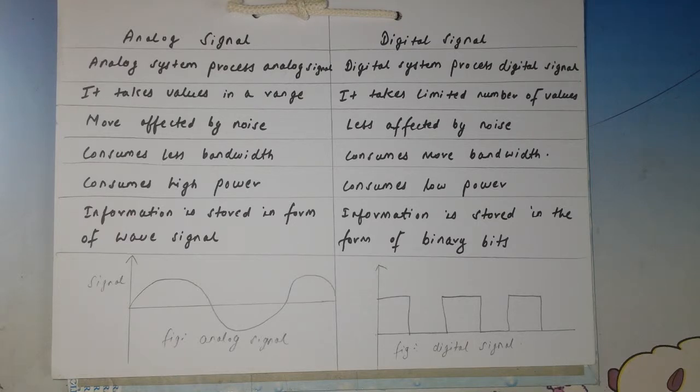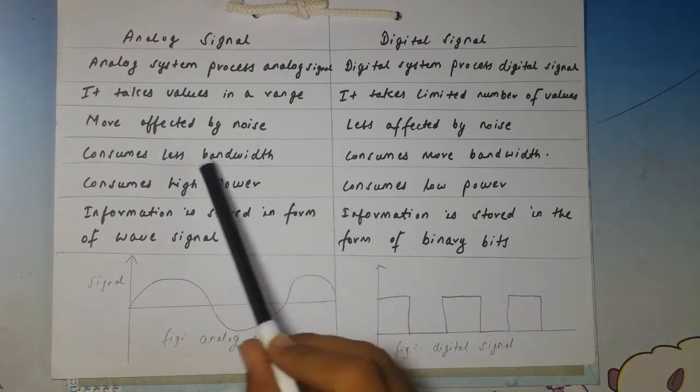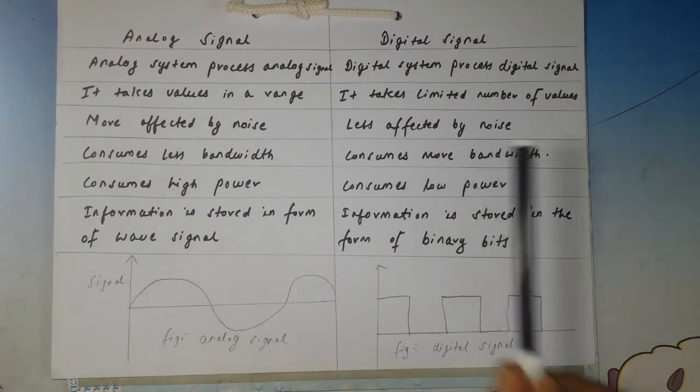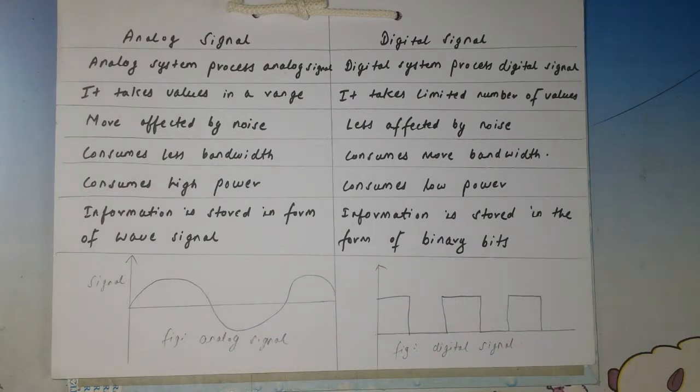Analog signal consumes less bandwidth, whereas digital signal consumes more bandwidth. This means analog requires less bandwidth for transmission, while digital requires high bandwidth for transmission.